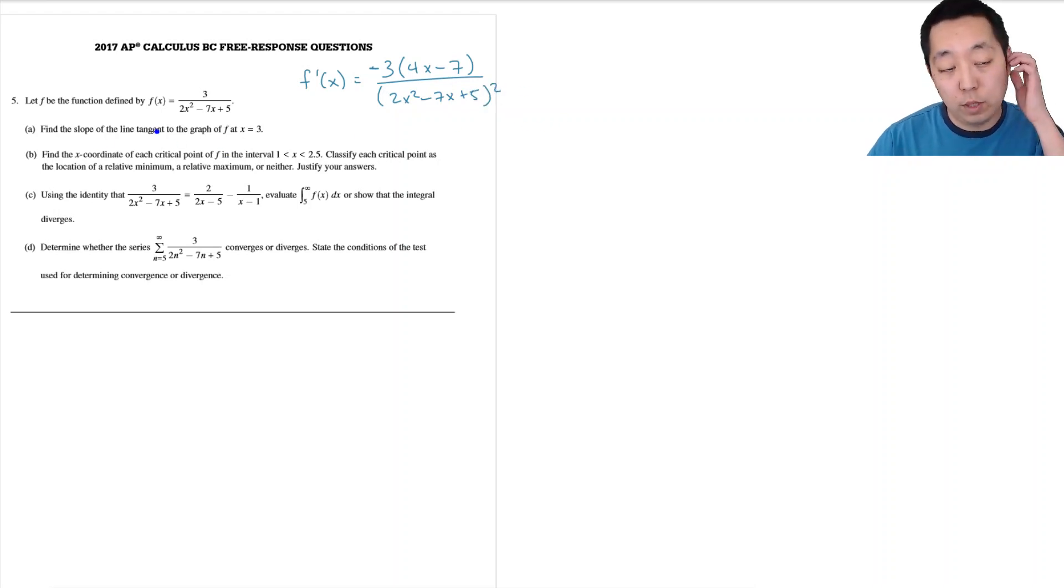That's minus 3 times the derivative of the bottom is 4x minus 7 divided by the bottom squared. Because when I want the slope of the tangent line, I basically need the derivative at x equals 3. So now I plug in 3, negative 3 times 4 times 3 minus 5, that's 12, that's 5. So 2, 9, 18. 18 minus 21 is minus 3, plus 5 is 2, 2 squared. So that's minus 15 over 4.